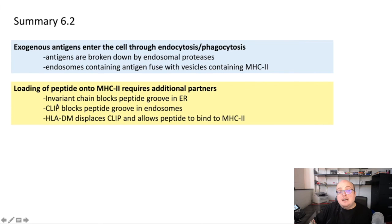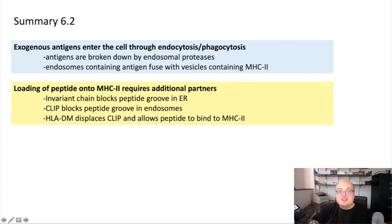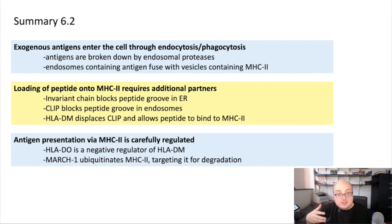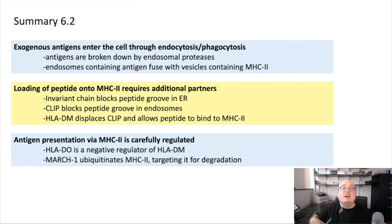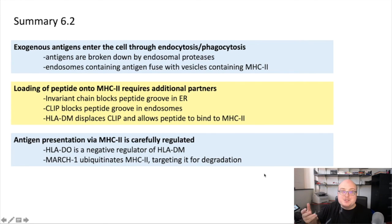Once MHC class II leaves the ER, the invariant chain is broken down but leaves behind a piece called CLIP, which continues to block the peptide binding groove within the endosomal compartment. In order to remove CLIP, MHC class II needs to associate with HLA-DM. DM displaces the CLIP molecule, which ultimately allows peptide binding to the MHC class II molecule. HLA-DO is a negative regulator of HLA-DM — DO inhibits DM, which ultimately prevents CLIP from dissociating from the peptide binding groove, preventing antigen loading onto MHC class II. In contrast, MARCH1 ubiquitinates MHC class II, targeting it for degradation, also turning down antigen presentation through this pathway.